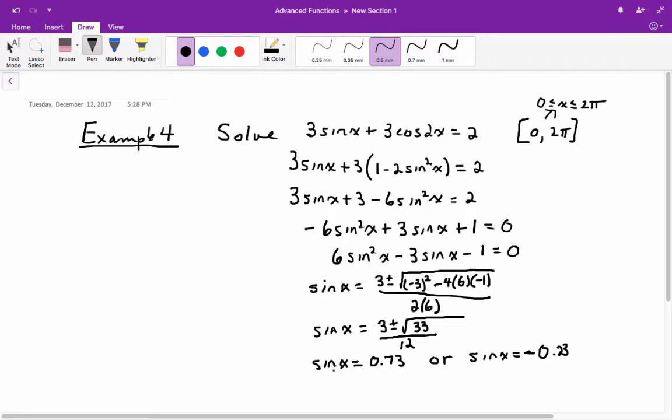Of course, sine of x being equal to 0.73 would be an angle up in the top two quadrants where sine is positive. So if you do x equals the inverse sine of 0.73, you get angle x equaling 0.82 radians, which of course is in the first quadrant, something like that.